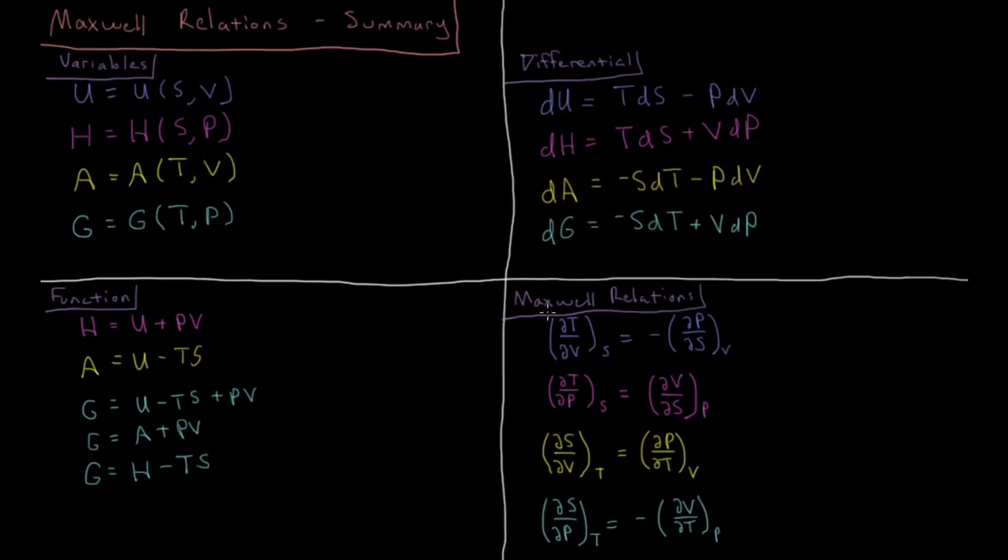As we showed in the previous video, there is a Maxwell relationship which will exist for each of these differential forms in terms of their mixed partial derivatives. The one we defined for internal energy is that dT/dV at constant S equals minus dP/dS at constant V. That just comes from replacing these with their partial derivatives in terms of this total differential and then taking the second derivative for the mixed partial derivative.